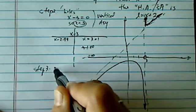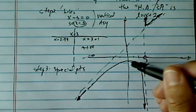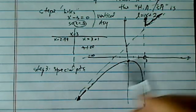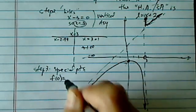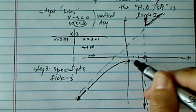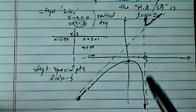Now number three, the last step, is the special points. What are the special points? Of course, we want to know where is this one at? So f of zero, in our case, happened to be minus one-third. So this is minus one-third, and that's here.